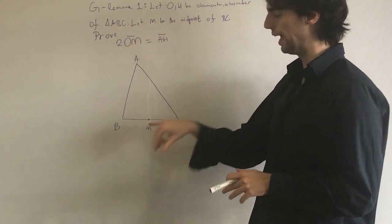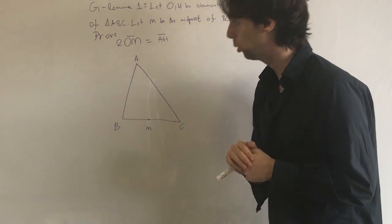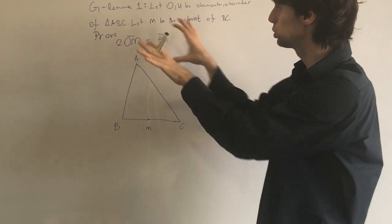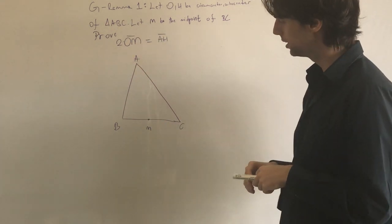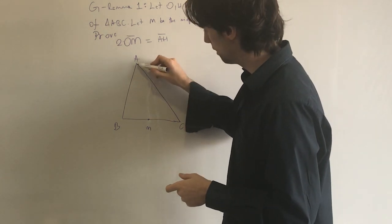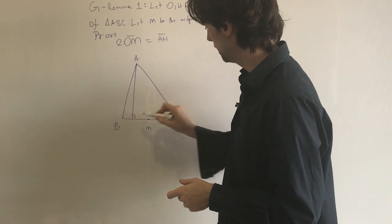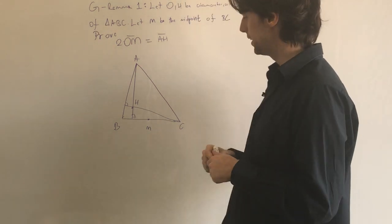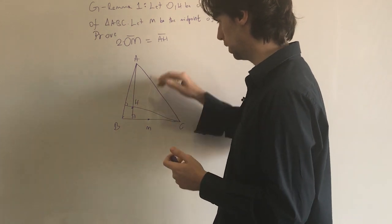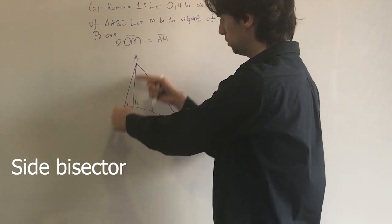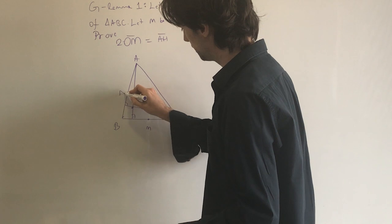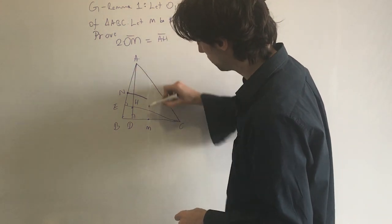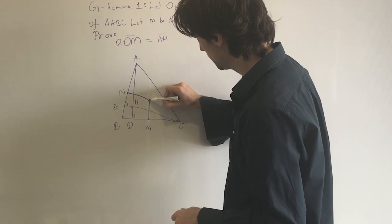I've only drawn M here, which is the midpoint of BC — I haven't drawn H or O yet. A big part of thinking about how to solve a geometry problem is constructing the points. For H, I need two heights; their intersection gives me H. For O, I use perpendicular bisectors — one opposite A and one opposite C. Let the midpoints be N, D, and E. Where those perpendicular bisectors meet at 90-degree angles, that gives me O.